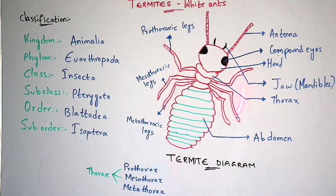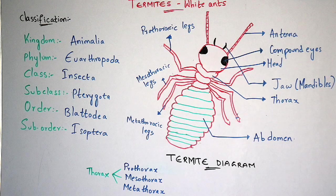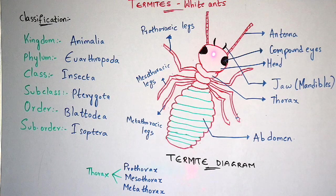This is the structure and diagram of termites, also known as white ants. The structure is very similar to normal ants. Here this is the head part and this is the abdomen part. Within the head part there is the presence of compound eyes — this black colored structure which I have drawn is known as compound eyes.